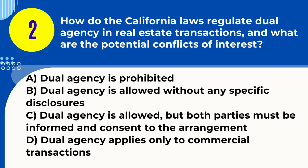Question 2. How do California laws regulate dual agency in real estate transactions, and what are the potential conflicts of interest? A. Dual agency is prohibited. B. Dual agency is allowed without any specific disclosures. C. Dual agency is allowed, but both parties must be informed and consent to the arrangement. D. Dual agency applies only to commercial transactions.